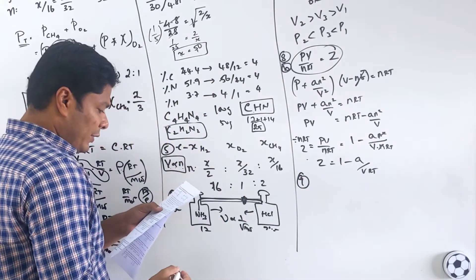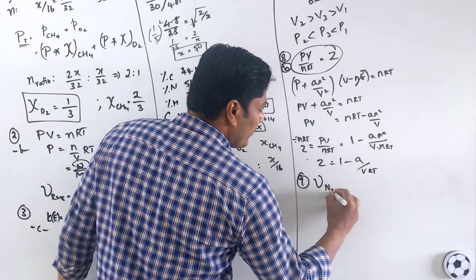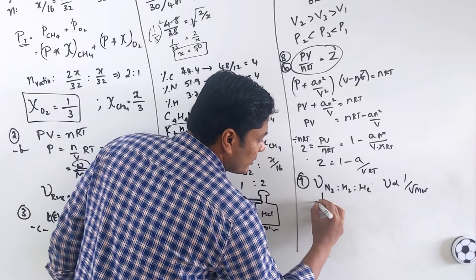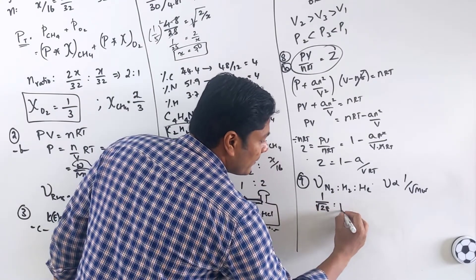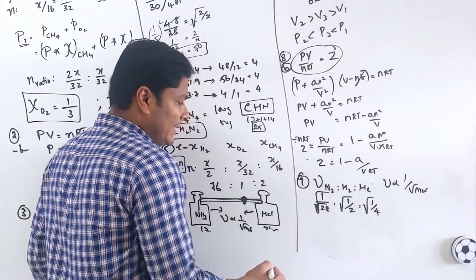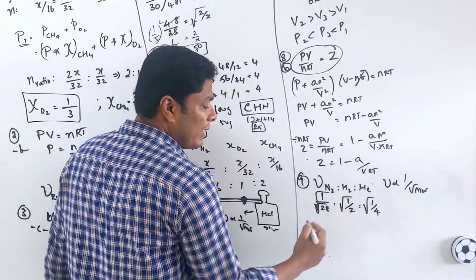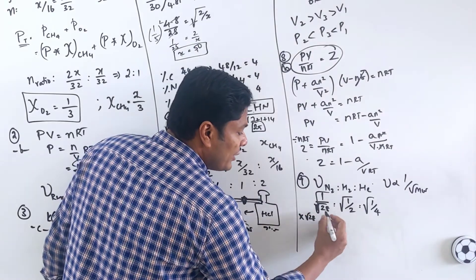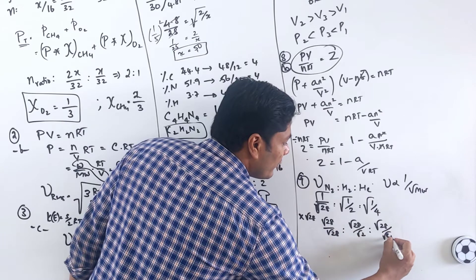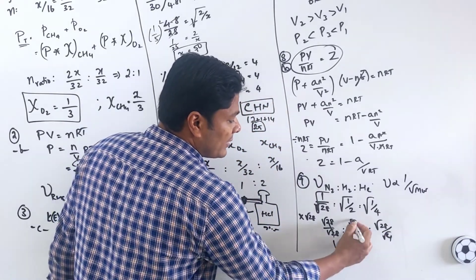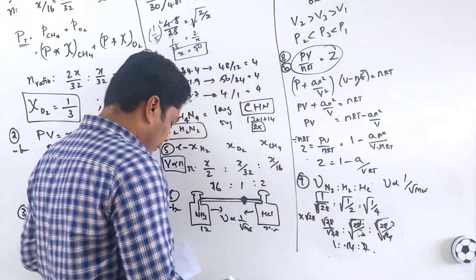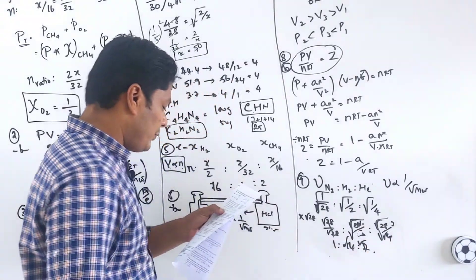Question 9: Three footballs filled with N2, H2, and helium. Rate of effusion is proportional to 1/√(molecular weight). Ratios: 1/√28 : 1/√2 : 1/√4. Multiplying through by √28 gives 1 : √14 : √7. Option A.